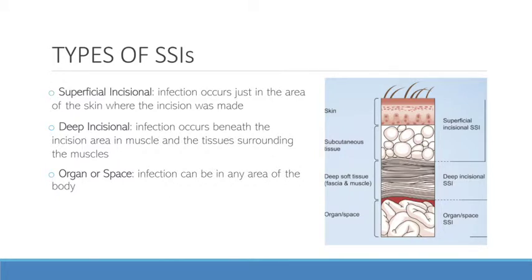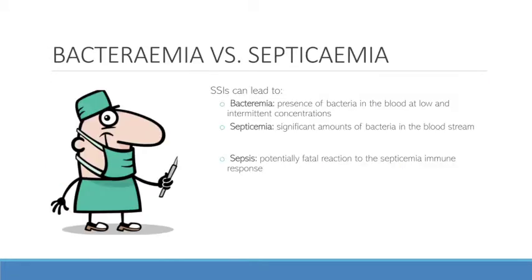Going back to one of the complications from earlier on, bacteremia and septicemia are one of the more severe adverse effects of surgical site infections. Although they are very similar, bacteremia is described as the presence of bacteria in the blood at low and intermittent concentrations, and septicemia is where there are significant amounts of bacteria that have invaded the bloodstream. Furthermore, septicemia can lead to sepsis, which is usually a fatal reaction resulting in death.